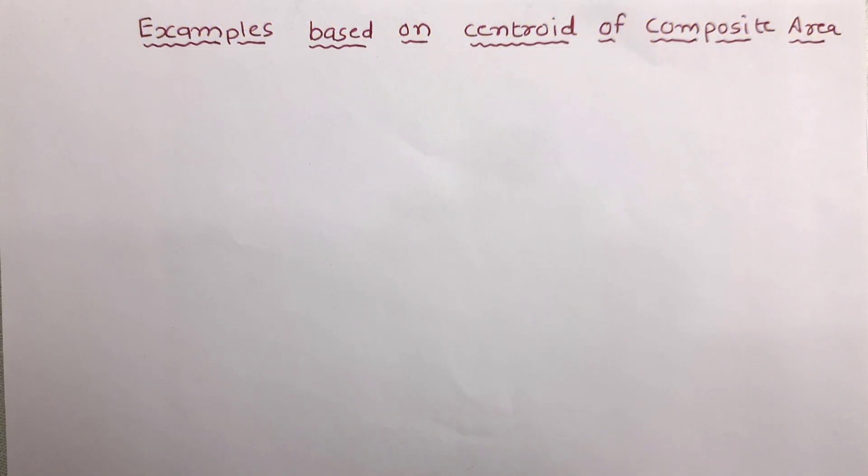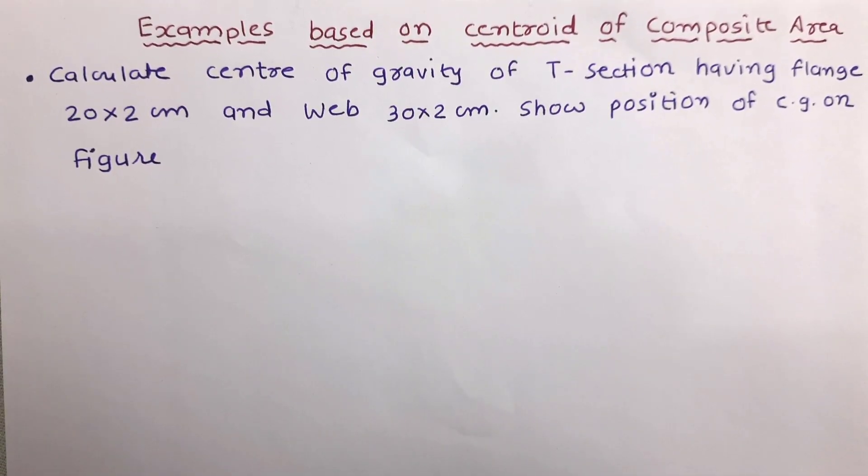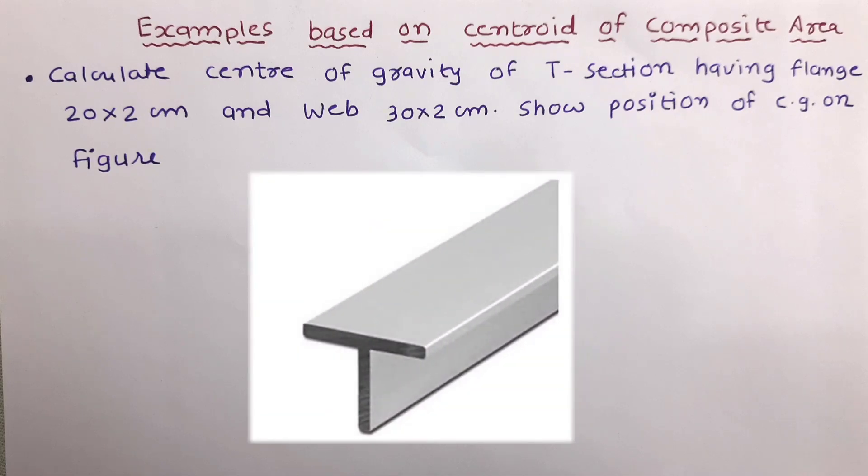So let us start with the problem. This is the example given: calculate center of gravity of T section having flange dimension 20 by 2 cm and web 30 by 2 cm. Show position of center of gravity on the figure.